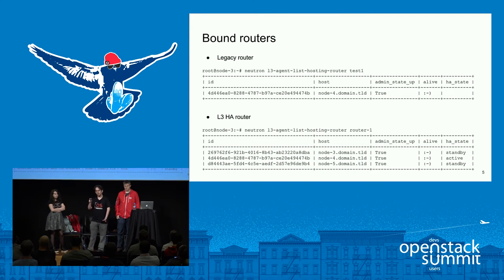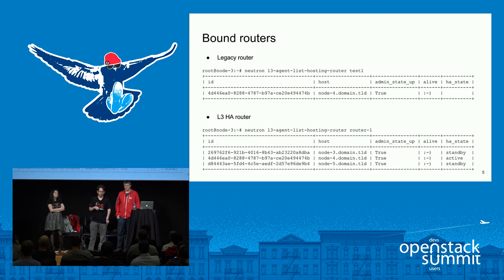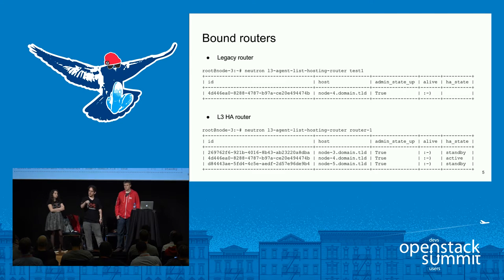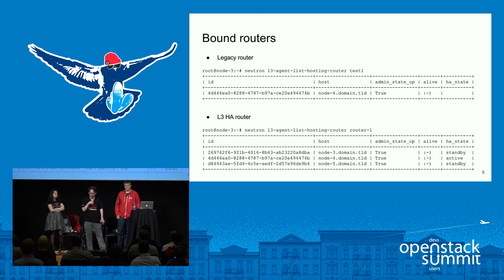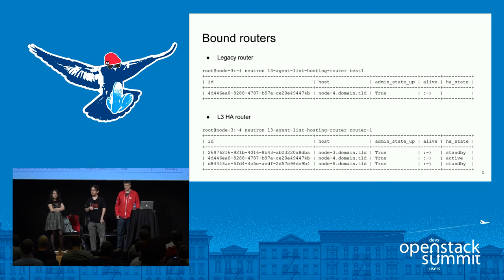On the legacy router - the non-HA cases of non-HA legacy or DVR non-HA - it's a simple case because we have one router, we need to choose one agent among all the possible network nodes, and we just choose it and create the bindings. Once created, the server lets the L3 agent know this is a new router, please handle it. On the layer 3-HA case, it's a bit more complicated because we need to choose a bunch of network nodes that will handle it. In this case, nodes 3, 4, and 5 are all network nodes, and the router is scheduled to all these nodes, and it is active only on node 4.